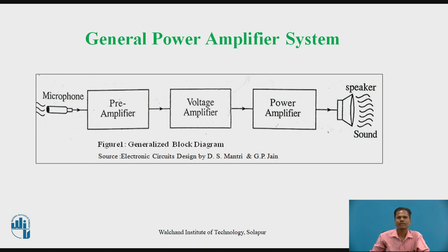The output of the preamplifier — that is, the voltage amplified signal — is applied to a voltage amplifier. A voltage amplifier is a small signal amplifier with high input resistance and high output resistance. It amplifies the voltage signal, and the output of this voltage amplifier is applied to a power amplifier. So the voltage amplifier raises the voltage level of the input signal, which is then given to the input of the power amplifier. A power amplifier is a large signal amplifier whose output is high power, so its input should be a sufficiently large voltage signal.